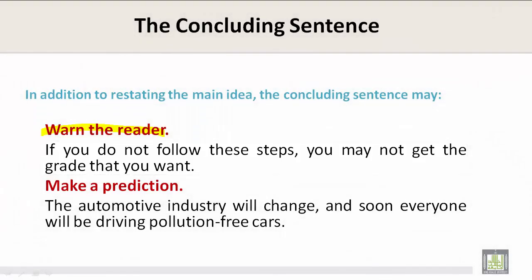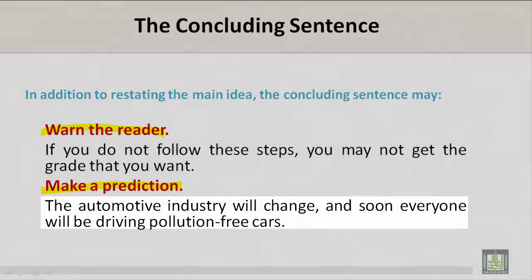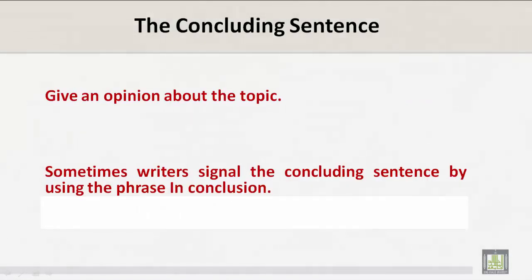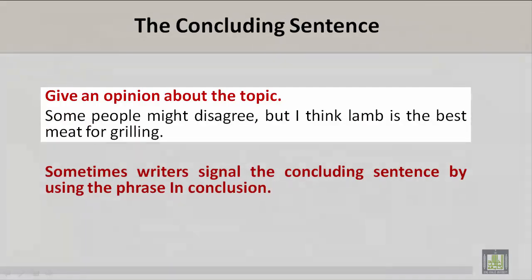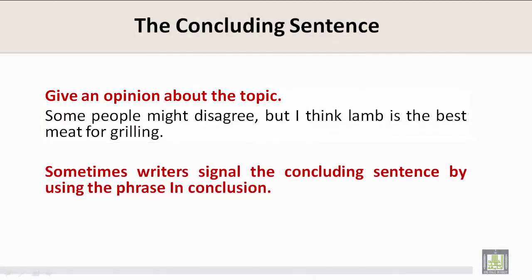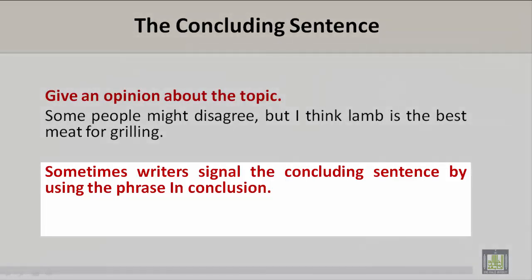Or the concluding sentence may make a prediction: 'The automotive industry will change and soon everyone will be driving pollution-free cars.' The concluding sentence can also give an opinion about the topic. For example: 'Some people might disagree, but I think lamb is the best meat for grilling.' Sometimes writers signal the concluding sentence by using the phrase 'in conclusion.' For example: 'In conclusion, learning a second language has many advantages.'